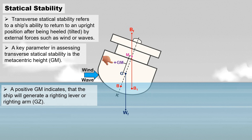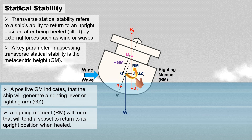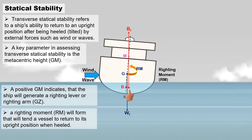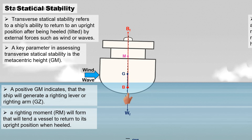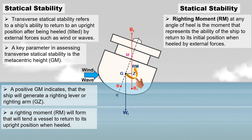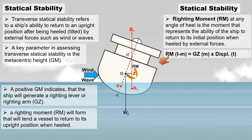A positive GM indicates that the ship will generate a righting lever or righting arm, GZ, so a righting moment will form that will tend the vessel to return to its upright position when heeled. The righting moment at any angle of heel represents the ability of the ship to return to its initial position. It is equal to the righting lever times the ship's displacement, expressed in ton-meters.